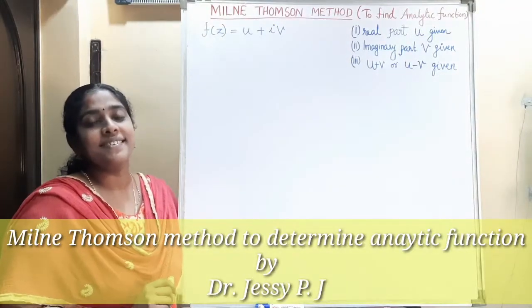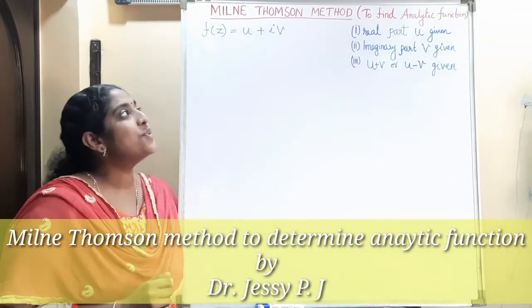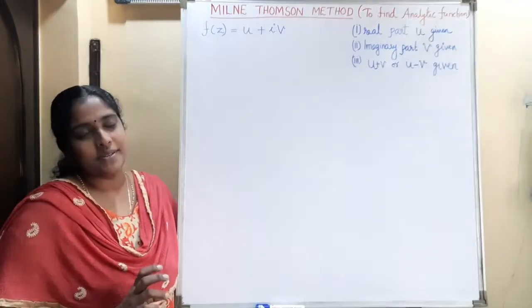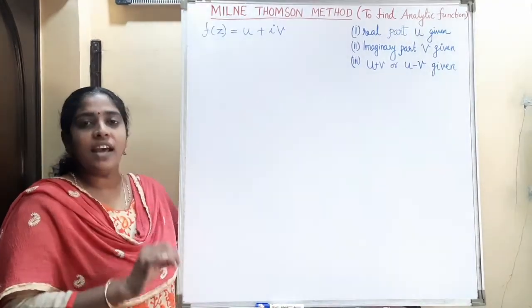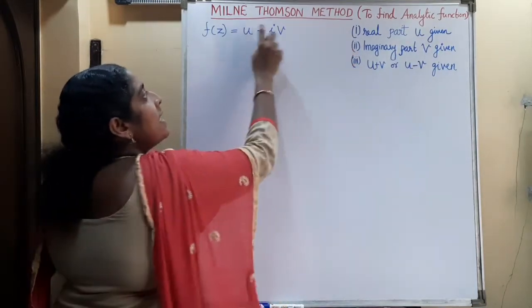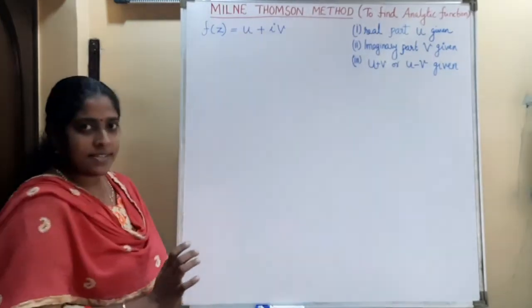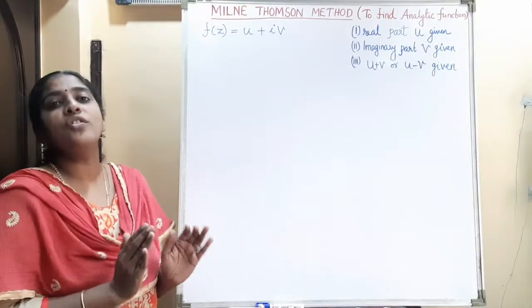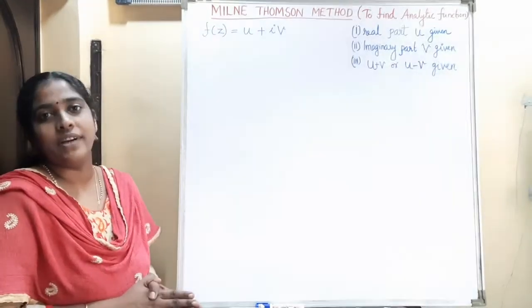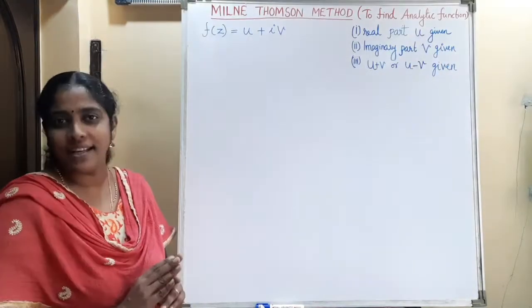Today we will discuss the Milne-Thompson method. It is a method to determine the analytic function. We can use this method when the analytic function F(z) has only the real part U given, only the imaginary part V given, or the combination of both real and imaginary parts — that is U plus V or U minus V — given.